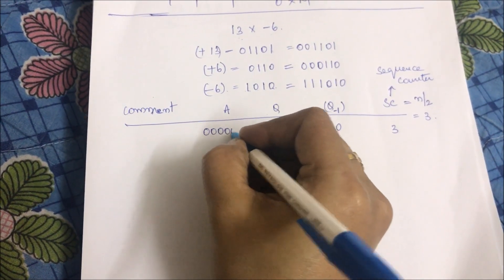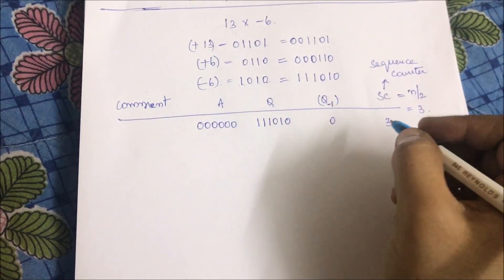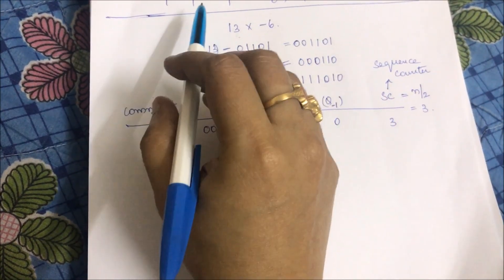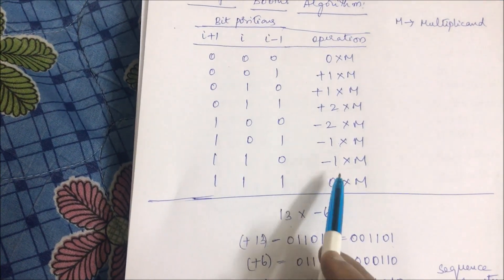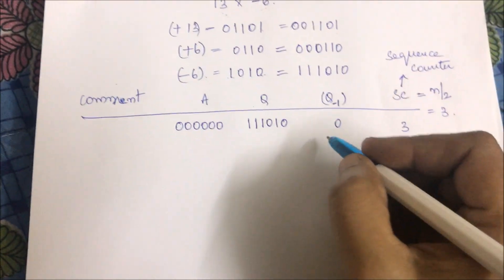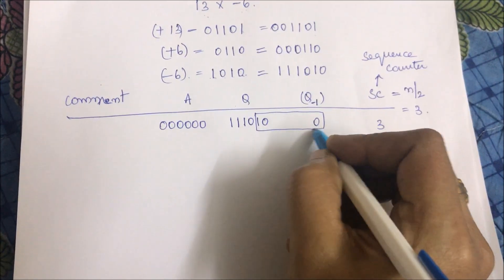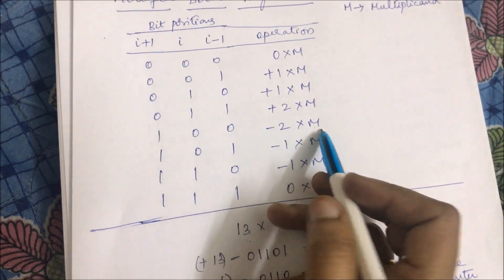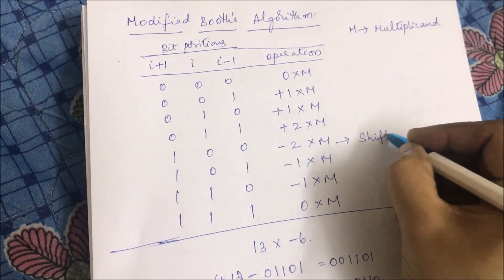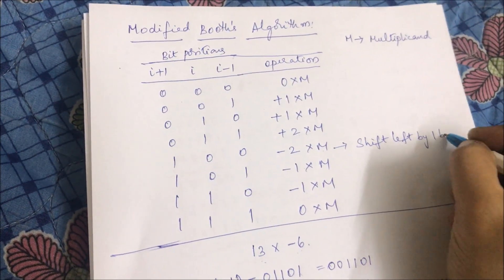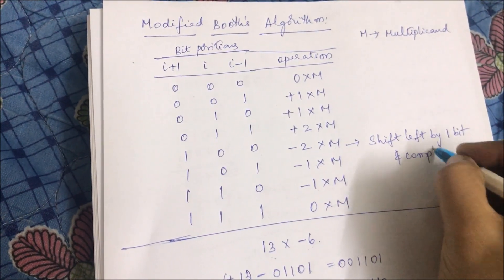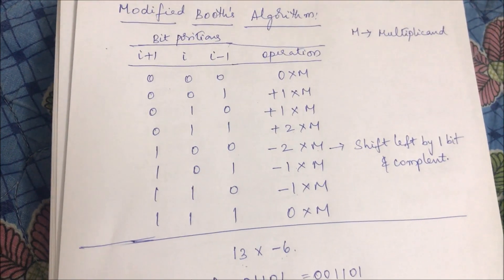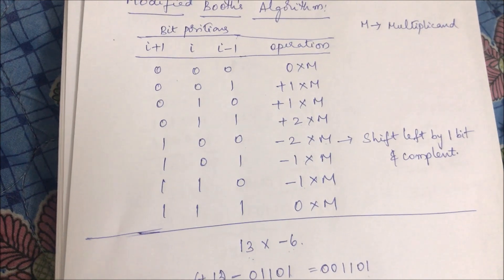We check the least significant 3 bits including the implicit bit. From the table, the 3-bit combination is 1,0,0, which corresponds to -2×m. Minus 2 times m means shift left by 1 bit and then complement the value, because multiplying by 2 is a left shift, and the minus sign means we complement it.